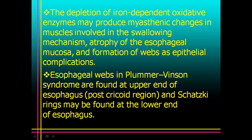Esophageal webs in Plummer-Vinson syndrome are found at the upper end of the esophagus in the post-cricoid region, and Schatzki's rings may be found at the lower end of the esophagus.